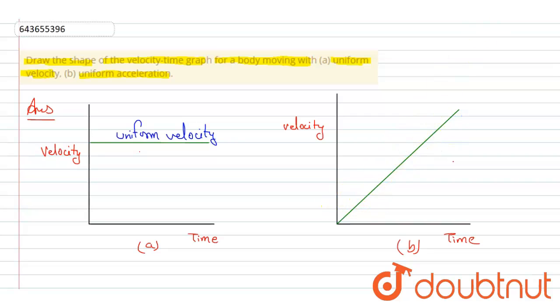So the graph will be like this, and this is uniform acceleration. This shows uniform acceleration. That's it, thank you.